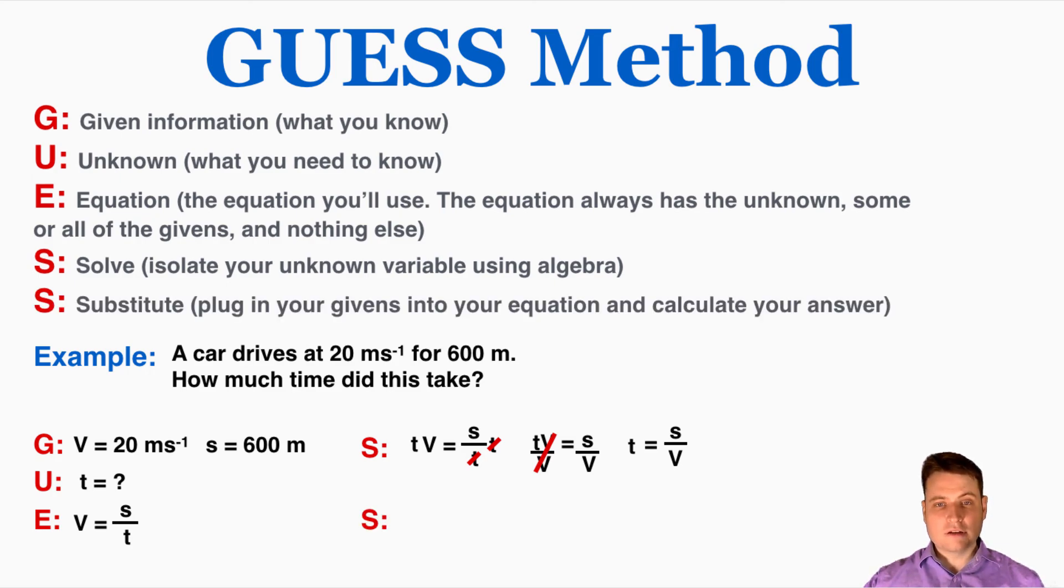So we're going to substitute, plug in your givens into your equation, and calculate your answer. So I'm just going to plug in my given numbers. I know displacement and I know velocity, so when I plug that in I get an answer of 30 seconds, and that is how you do the GUESS method.